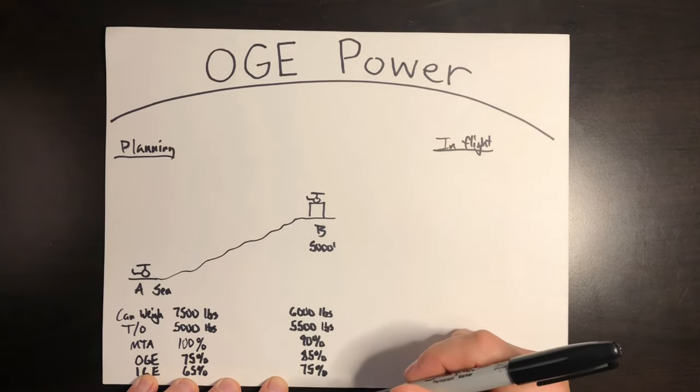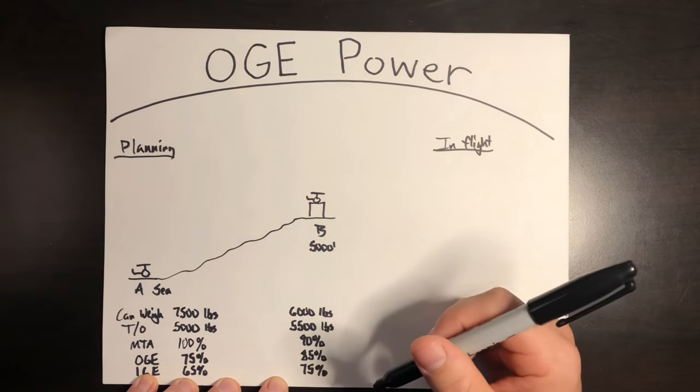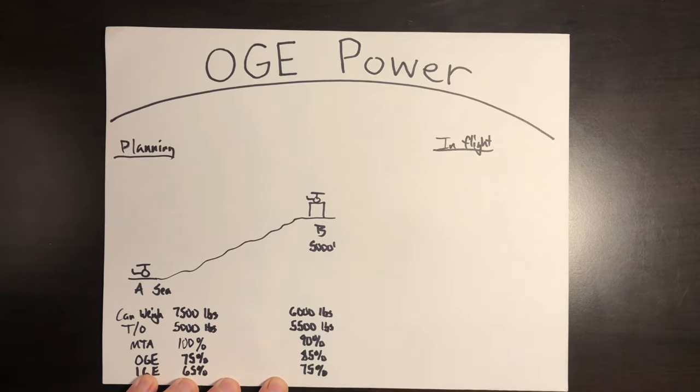Another way I can do it is the actual weight is less than the max allowable OGE weight. And in this case, 5,000 is less than 7,500. 5,500 is less than 6,000. Another way I can validate it.